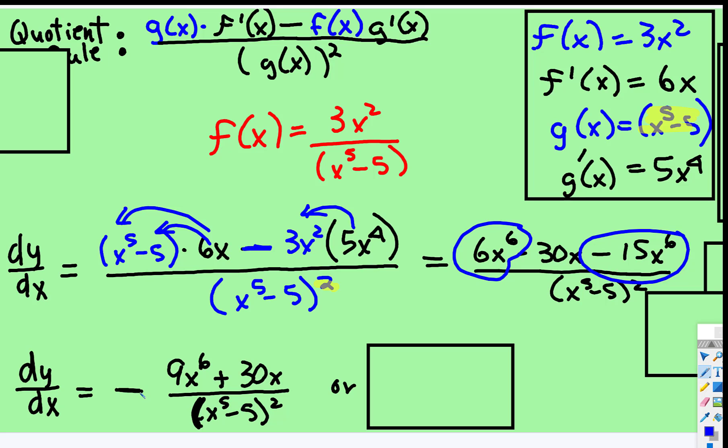So you can either write it in two ways. Since this will be negative 9x to the sixth subtract 30x, you can write it like that all over that thing. Or,